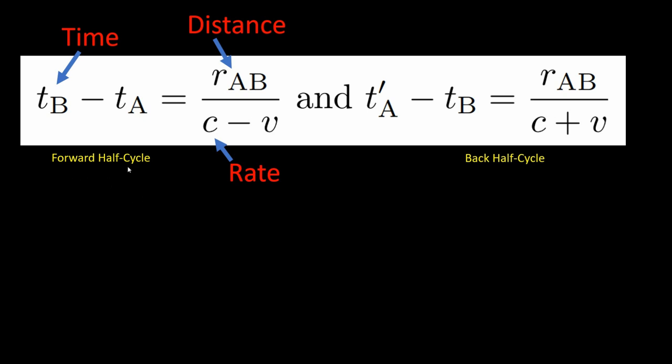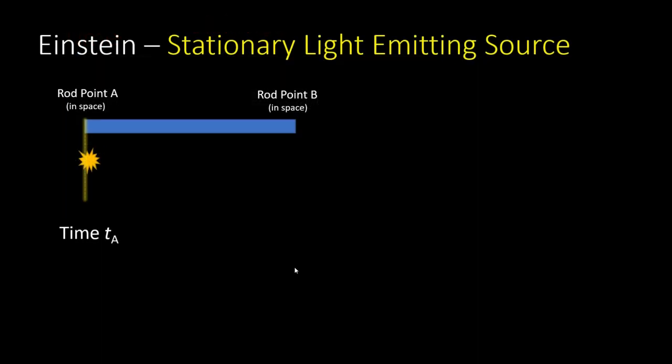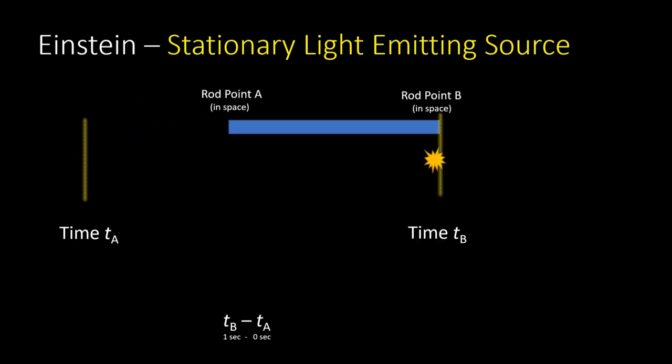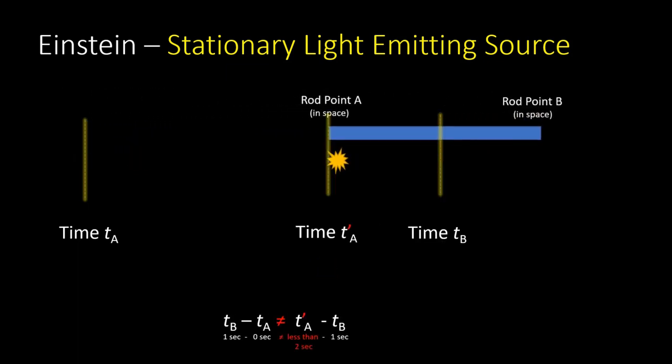And they describe the forward half cycle and the back half cycle of this animation. So based on the section two word problem that Einstein created, this is the forward half cycle equation, and this is the backward half cycle equation.